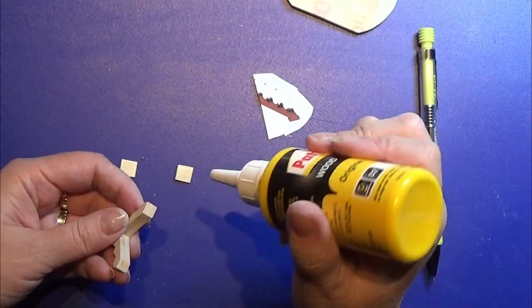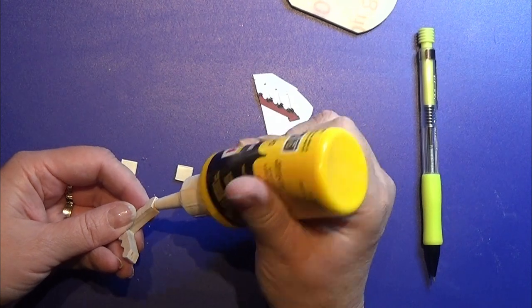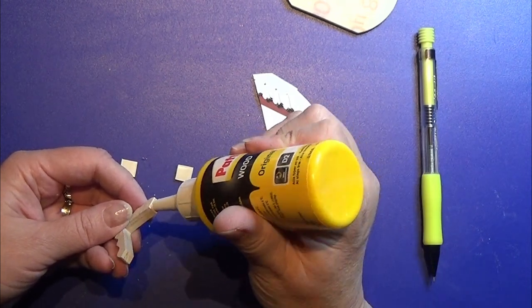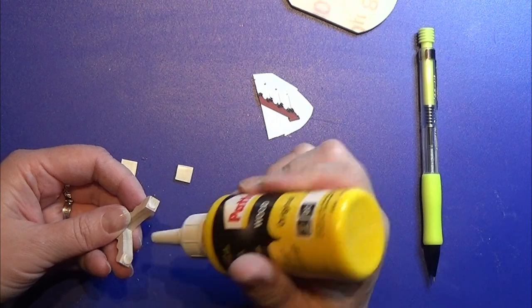Then I am going to glue on the feet on the bow, and when that is all dry, I am going to paint it red.